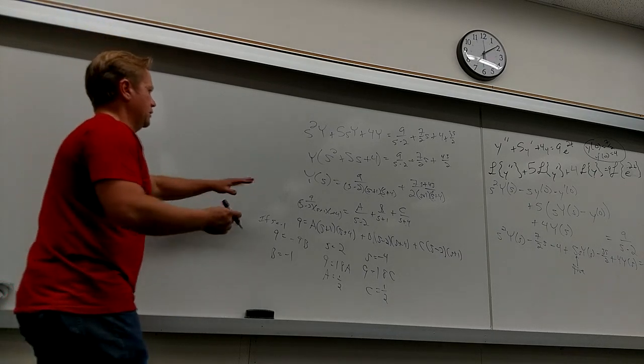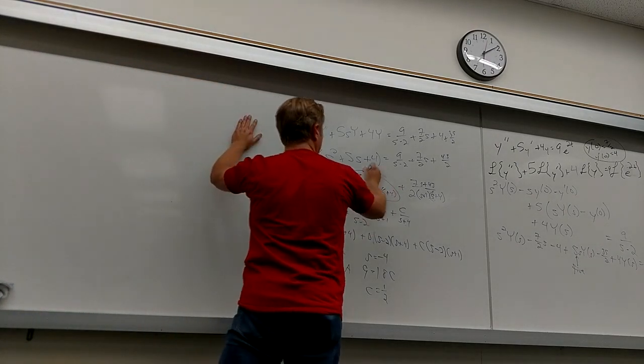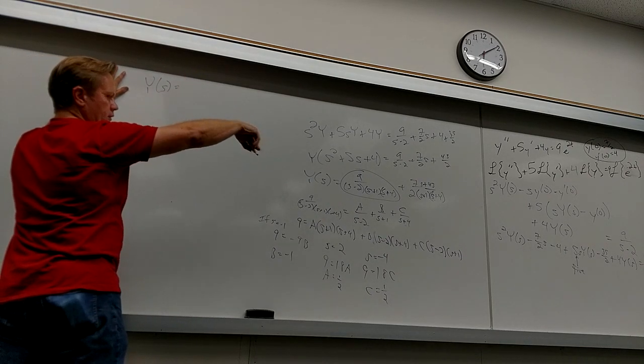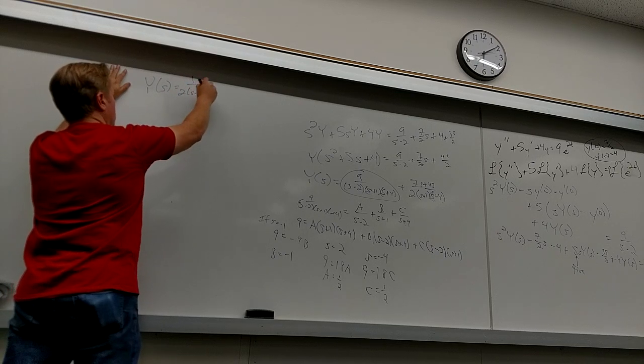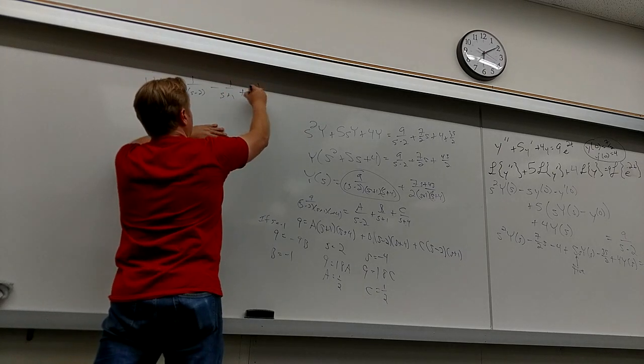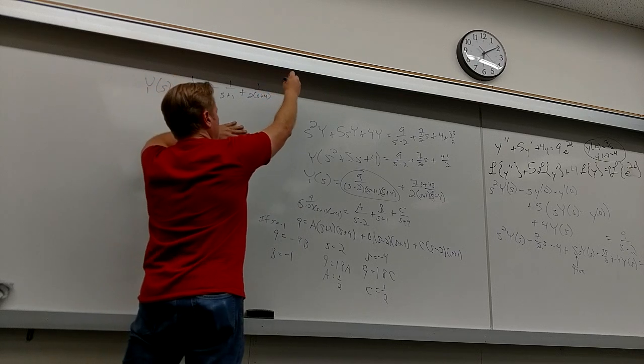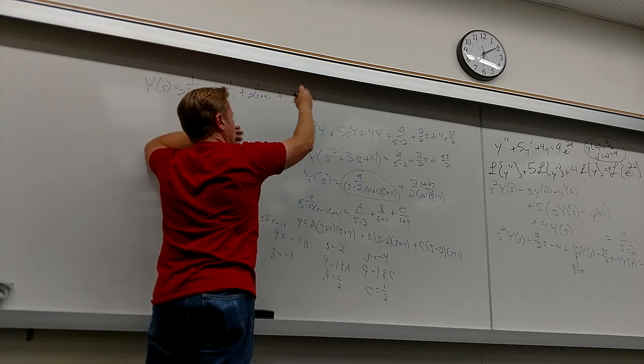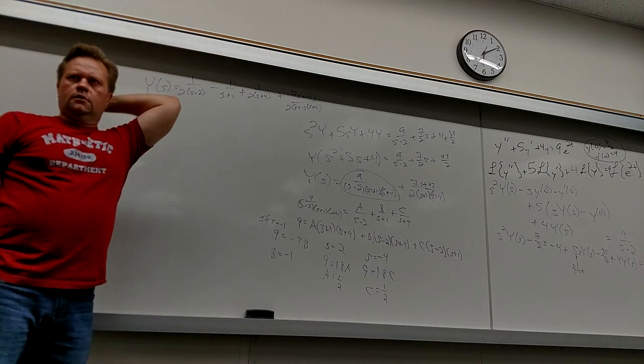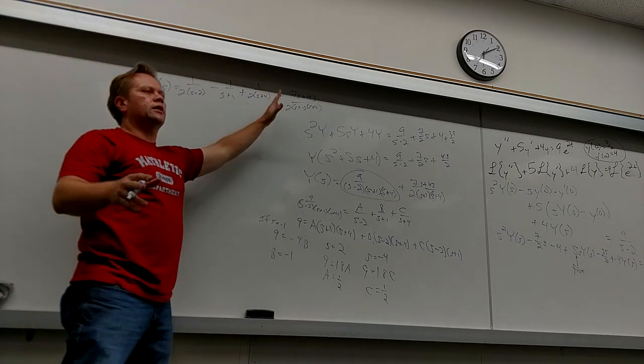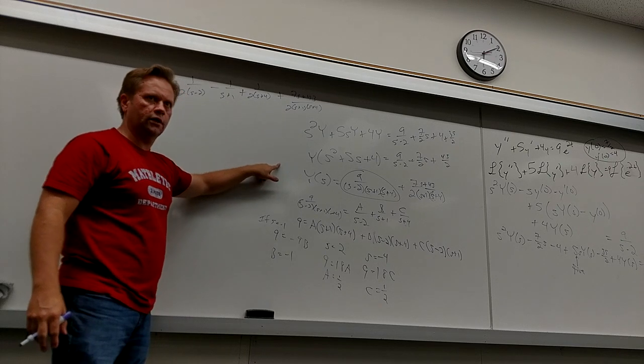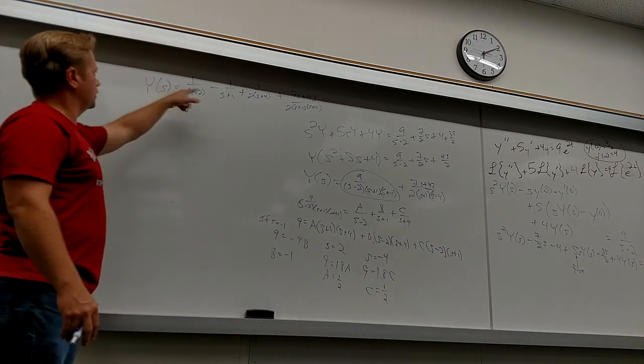So, that means that this piece. What do I know so far? Y of S equals 1 over 2 times S minus 2 minus 1 over S plus 1 plus 1 over 2 S plus 4. And then I still have to do this piece. Plus 7S plus 43 over 2 S plus 1 S plus 4. Now, see, now, just to kind of truncate this a little bit. Hopefully, everybody's okay with this. We've already done a few partial fractions. You can just do the same thing to this guy we just did, right?